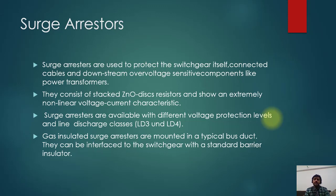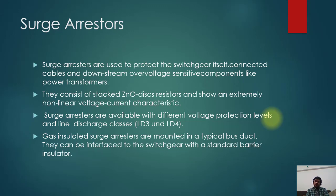There could be surges in the system — surges of, for example, two or three times the rated voltage. These could be the result of lightning in the system. Such arrestors protect very expensive equipment like transformers in the station, and also protect generators and GIS equipment from these surges.